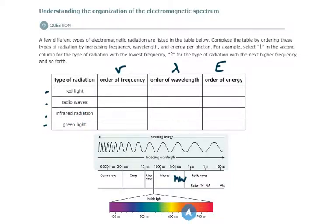So red and green light are going to fall within the visible light spectrum, which is this very narrow band here, the only type we can see with our eyes. Infrared is over here, it is a type of non-ionizing radiation, and so are radio waves.